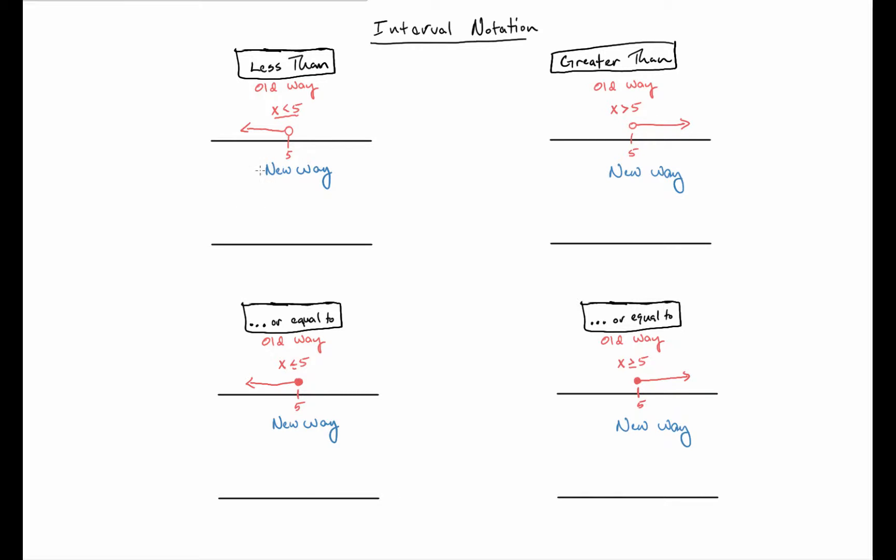The first part is the same in that we're still going to find five, for example here. But now, since it's less than and five is a critical value but not part of the solution set, I'm going to use a parenthesis to show that it is an endpoint but not part of the solution set, and then I use the arrow the same way I would before.